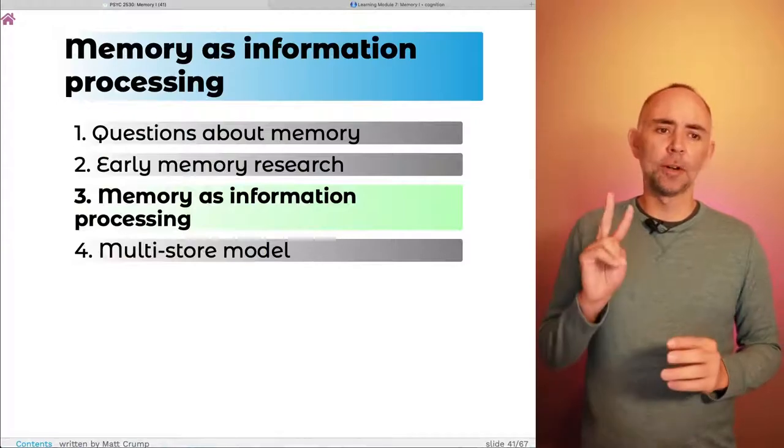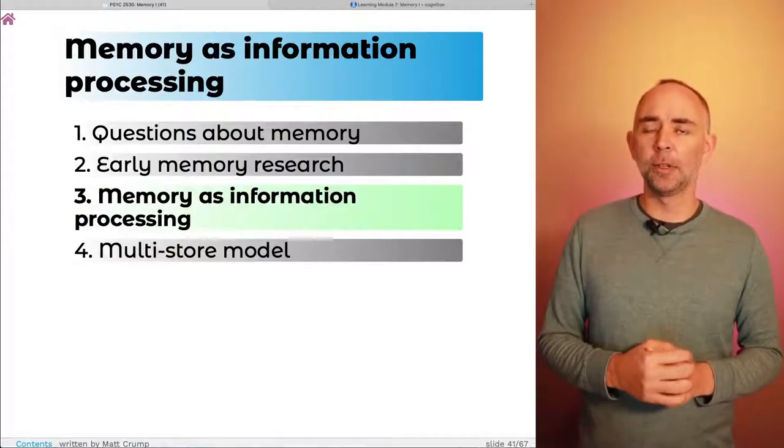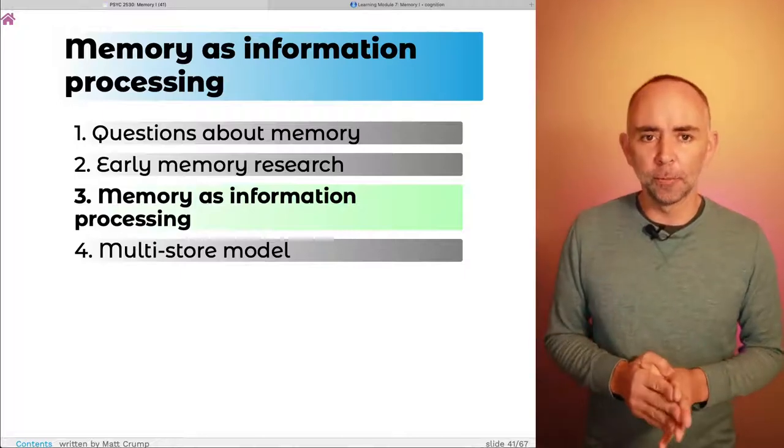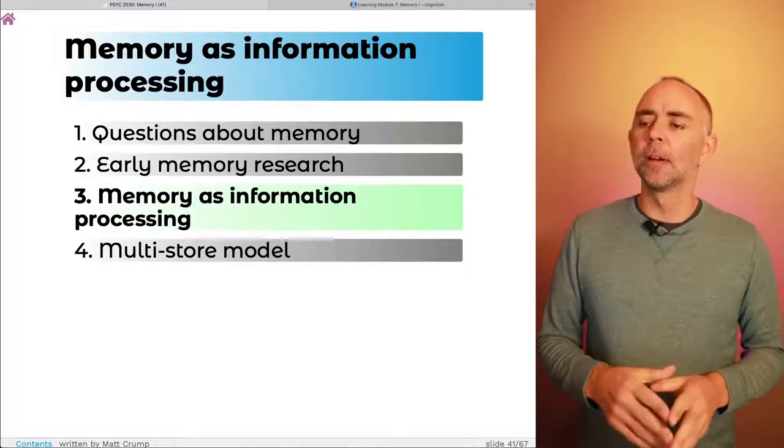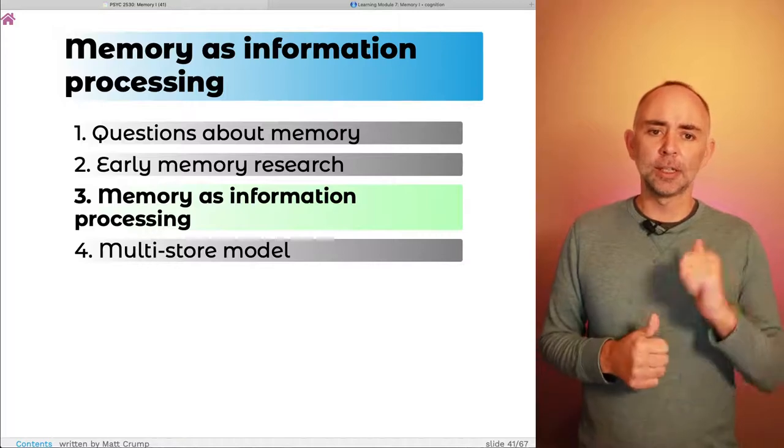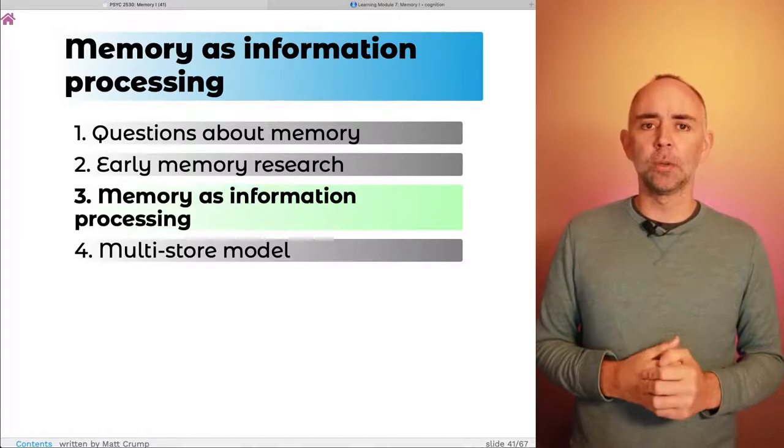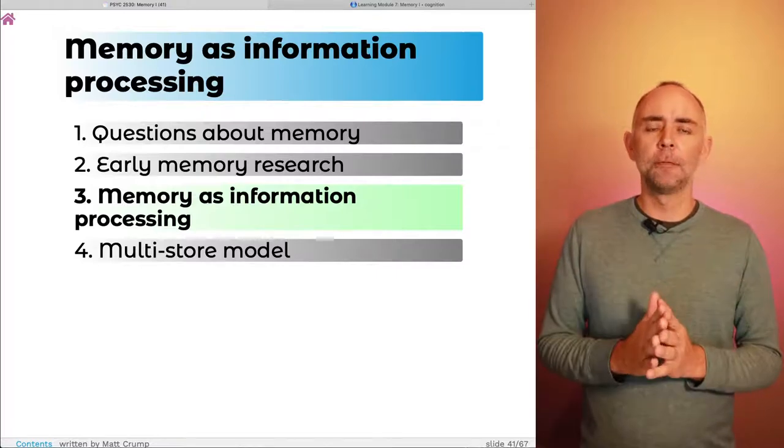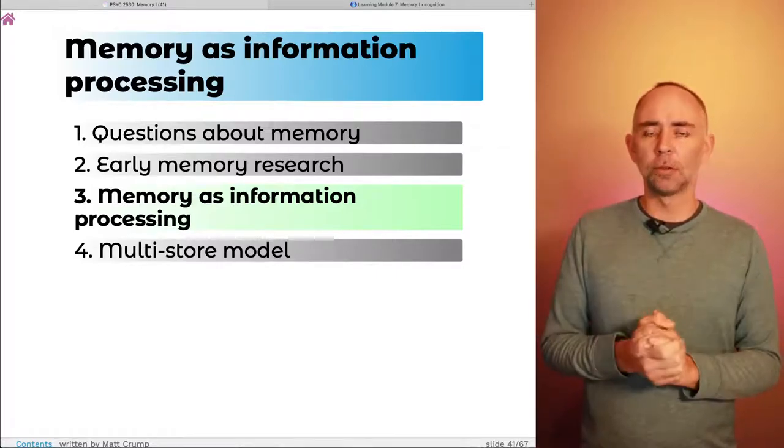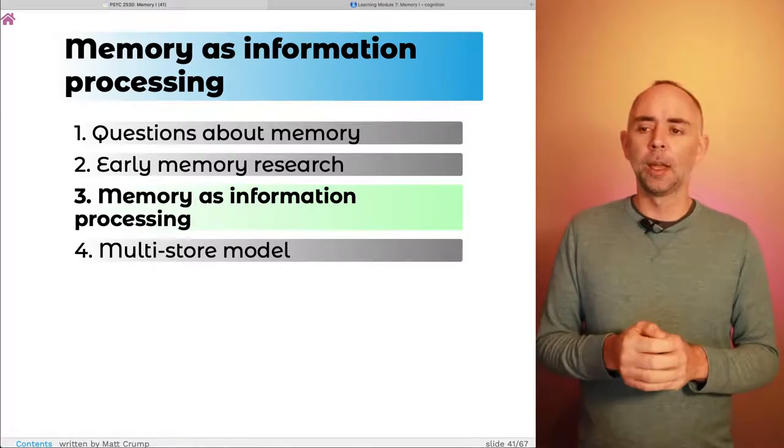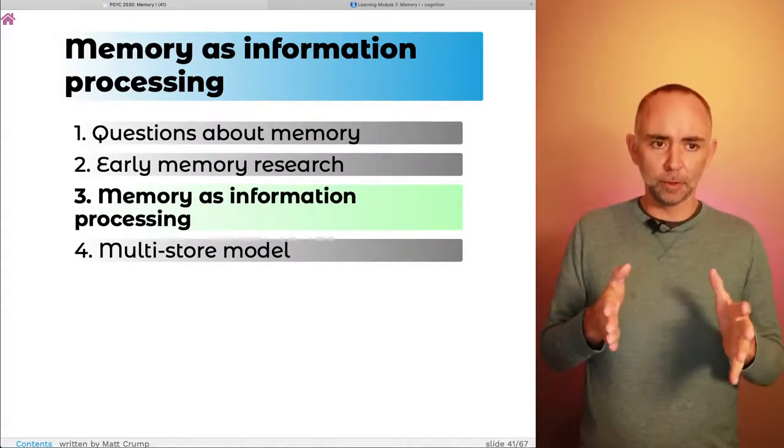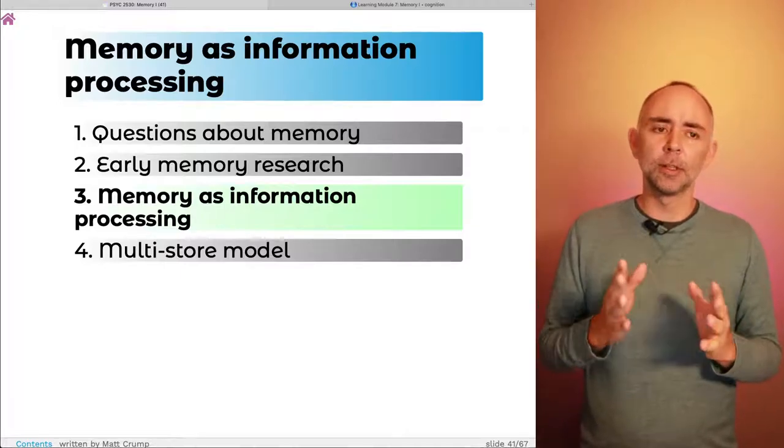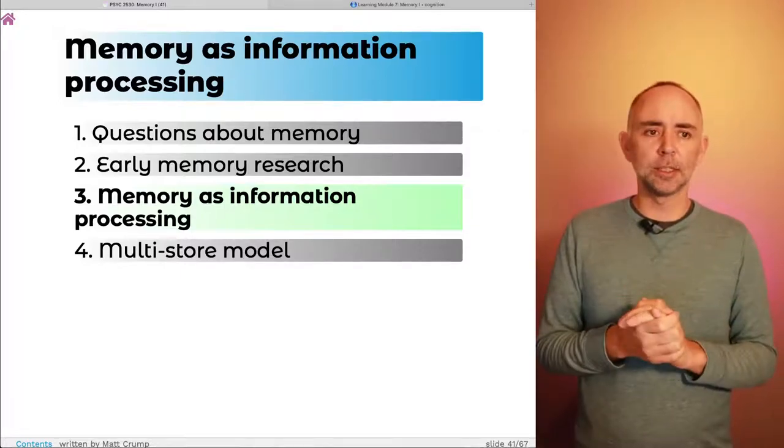Okay, welcome back. We are in part two of Memory One, and we're going to talk about memory as information processing as the first part of this, and then the second part we're going to talk about a multi-store model of memory. Both of these follow some of the earlier historical research that we talked about in the first part.